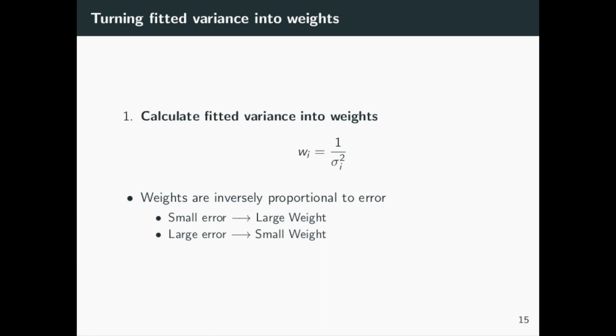Since we know the individual variances, we can calculate the different weights that we will be using. The weights are simply the reciprocals of the variance. Because they are inversely proportional, small errors will lead to larger weights and larger errors will lead to smaller weights.